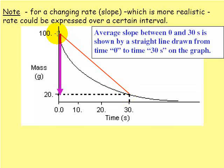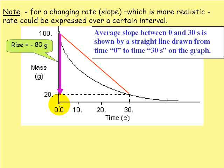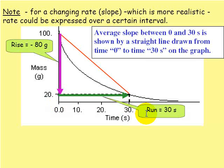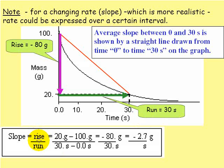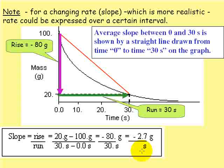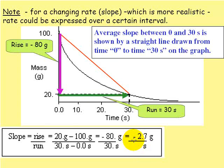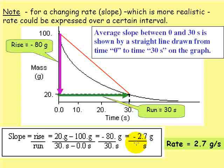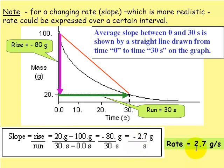So the rise is from 100 down to 20, which is negative 80 grams. The run goes from 0 over to 30, so the run is 30 seconds. Slope is rise over run, which is negative 80 over 30, which comes out to negative 2.7 grams per second. Even if the slope is negative, we still call the rate positive, so we can say the rate is 2.7 grams per second.